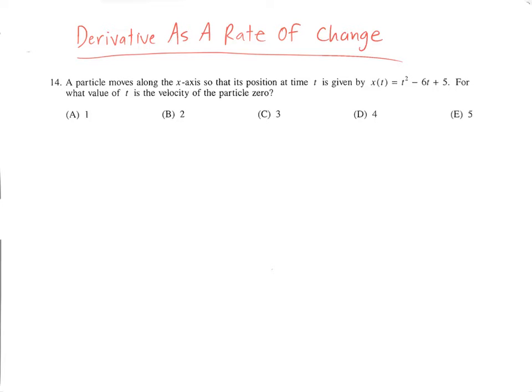A particle moves along the x-axis. The position is given. Sometimes position is given as s. In this case, it's given as x. It's moving on the x-axis, so x is appropriate. But we're just talking about motion moving back and forth basically along a number line. And this is its position at any time t. For what value of t is the velocity of the particle zero? So the most important fact, and the one that's used in every single one of these problems, is that the velocity is the derivative of position.